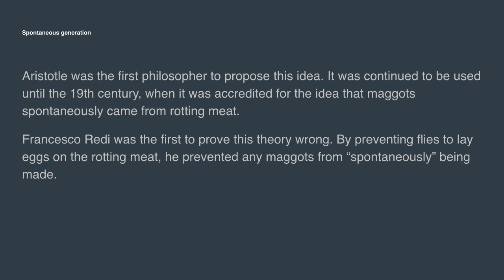Spontaneous Generation. Aristotle was the first philosopher to propose this idea. It continued to be used until the 19th century, when it was credited for the idea that maggots spontaneously came from rotting meat. Francesco Redi was the first to prove this theory wrong. By preventing flies from laying eggs in the rotting meat, he prevented any maggots from spontaneously being made — showing that maggots came from eggs laid by flies.